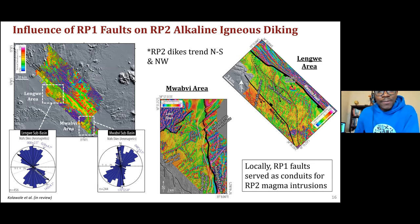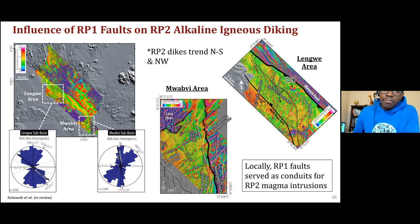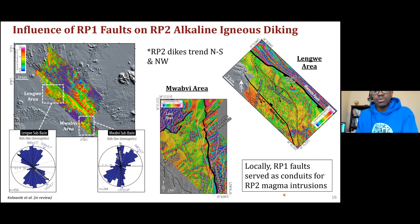We also examined the orientation of RP2 dykes. The RP2 dykes primarily trend north-south and northwest, and you can see a nice one overprinting lower-amplitude dykes trending northeast — those are RP1 dykes. We can see many RP2 dykes swinging or changing orientation as they approach the border faults of the rift, aligning parallel to those border faults. We interpret that locally, the RP1 faults served as conduits for RP2 magma intrusions, because we see a nice correlation between the dyke orientations as they approach these border faults.